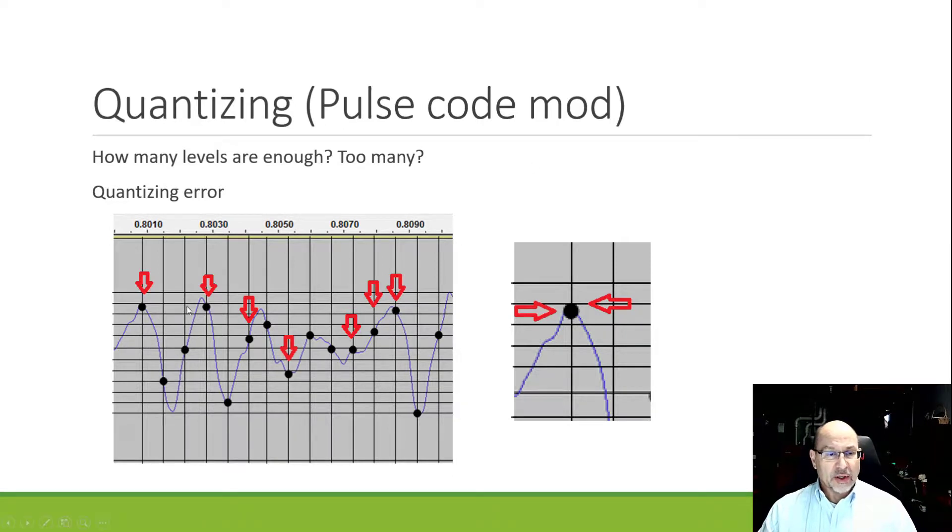But the question is what's the right number of levels? How many do we need to ensure that we don't run into things like quantizing error? We can see a couple of these that are not on the line. Some of them are right on the line, very nice. But what about these ones that are a little bit in the middle? That's what we mean by quantizing error.